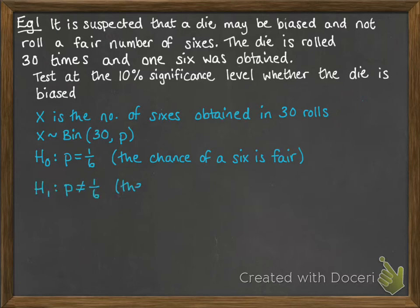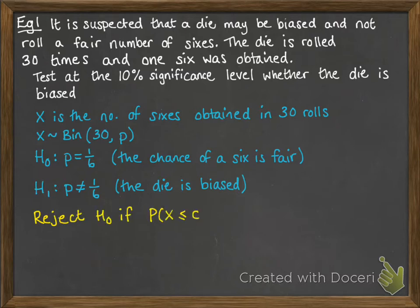Our alternative hypothesis is that the probability is not 1 sixth, the die is biased. We're looking at a 10% significance level, so we're going to reject the null hypothesis if the probability that X is less than our lower critical value is less than 5%, or more than our second critical value is less than 5%.